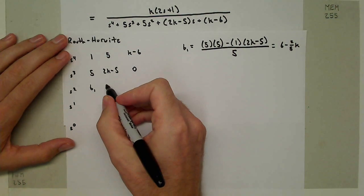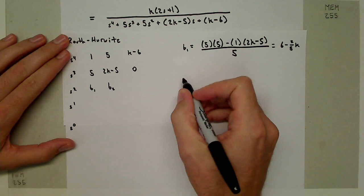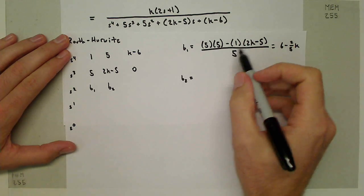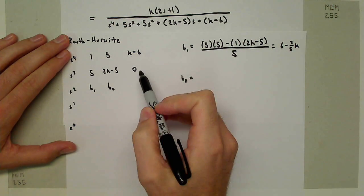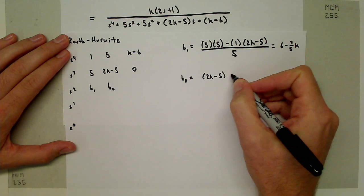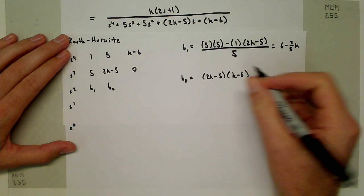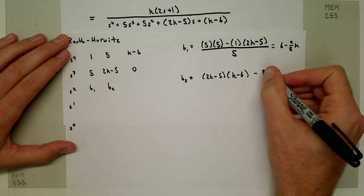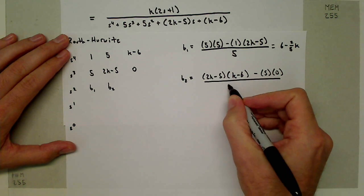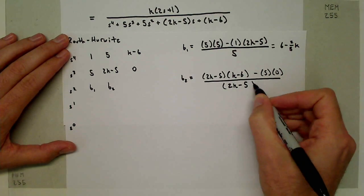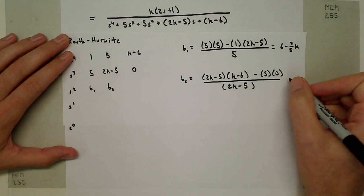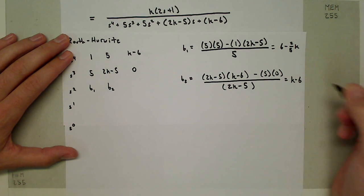We can also do that operation for B2. B2 is going to be equal to 5 times 0, this is added, so it's going to be (2K-5) times (K-6) minus 5 times 0, all over (2K-5). This nicely simplifies, these two terms cancel out, so I just end up getting K-6 here.